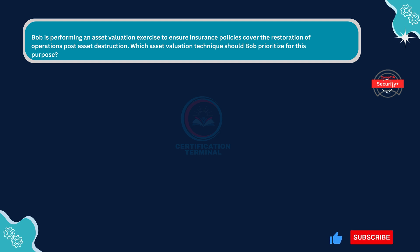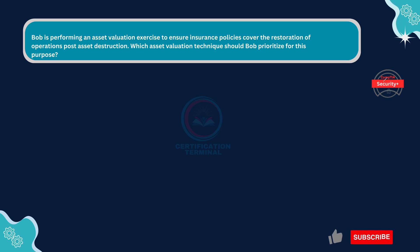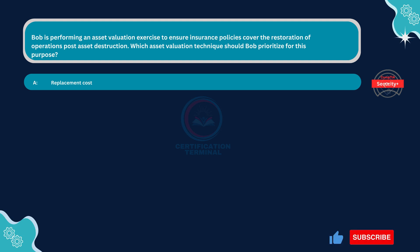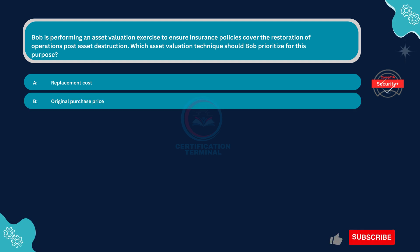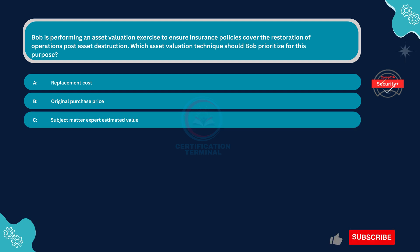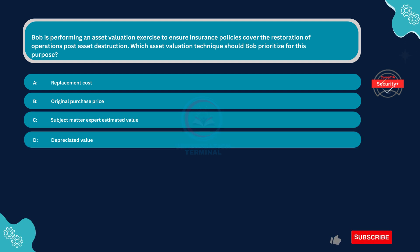Bob is performing an asset valuation exercise to ensure insurance policies cover the restoration of operations post-asset destruction. Which asset valuation technique should Bob prioritize for this purpose? Option A: Replacement cost. Option B: Original purchase price. Option C: Subject matter expert estimated value. Option D: Depreciated value.